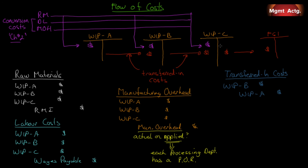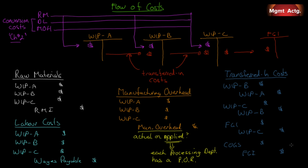For transferred-in costs: work in process B increases when work leaves department A; when work leaves department B it enters department C — department C increases, department B decreases. When it leaves department C, finished goods inventory increases and work in process C decreases. When it leaves finished goods, cost of goods sold increases and finished goods inventory decreases. This is the same as in job costing — all manufacturing costs begin by entering department A, then flow to B, then to C, then to finished goods inventory.